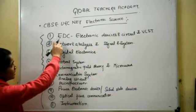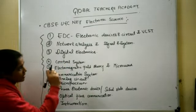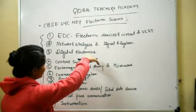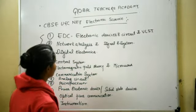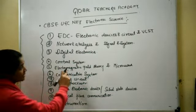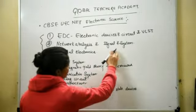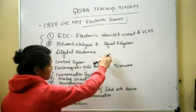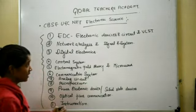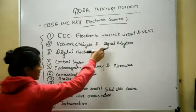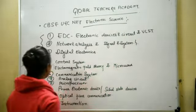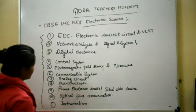The first unit is EDC — Electronics Devices and Circuits. I will discuss about all these units in detail. The second unit is Network Analysis and Signal and System. Signal and System is a different subject in Electronic Science, but here it is given in a combined form. The next unit is Digital Electronics.